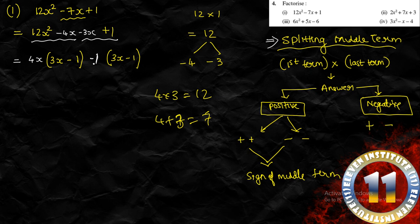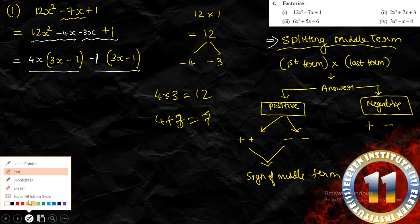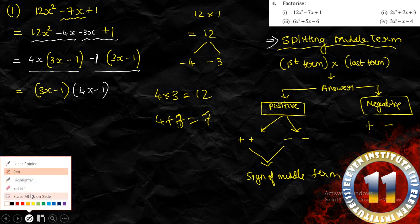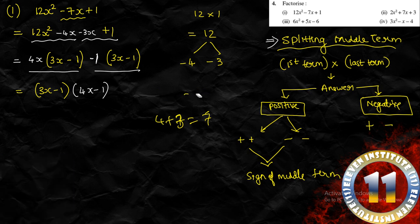From the first group, minus 4x and minus 3x plus 1: try minus 1 into 3x gives minus 3x, and minus 1 into minus 1 gives plus 1. Now looking at the terms, 3x minus 1 is common in both groups. Taking 3x minus 1 as the common factor gives us a bracket of 4x minus 1 and another bracket.